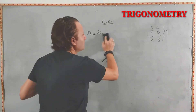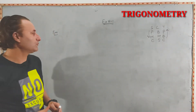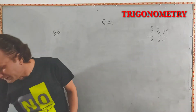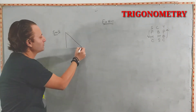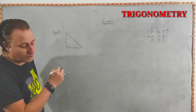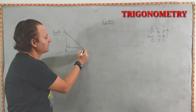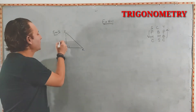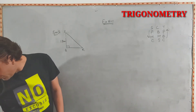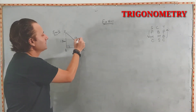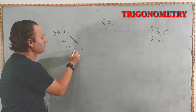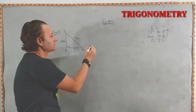Let's move to question number two. A figure is given with right-angled triangle PQR. PQ is 12 cm and PR is 13 cm. We need to find the missing side QR first before answering the question.